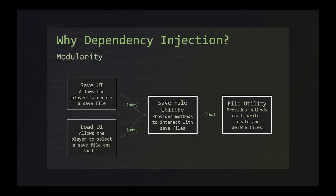Now you may have already seen that there's some duplication happening here. Both classes interact with serialisation and deserialisation of save files, and both classes interact with the file system of our target platform at a lower level. We start our refactoring, and the first thing we do is split the project up into four classes: two MonoBehaviour-derived ones that control the save and load UI, a save file utility that implements serialisation and deserialisation of save files specifically, and a file utility which deals with low-level operations such as reading, writing and listing files. The save and load UI classes both depend on the save file utility class, which itself depends on the file utility class. The UI classes create new instances of save file utility, which creates a new instance of file utility.